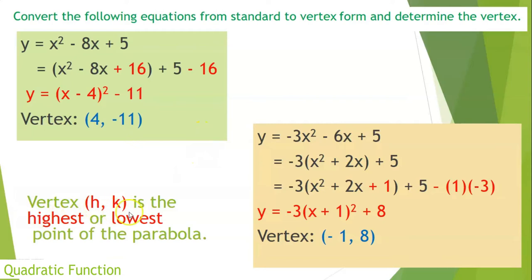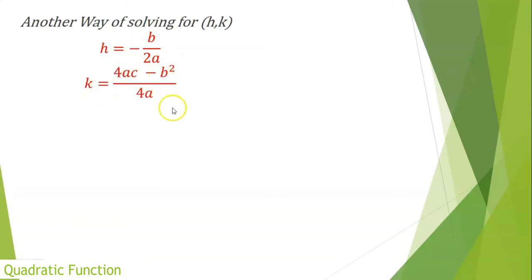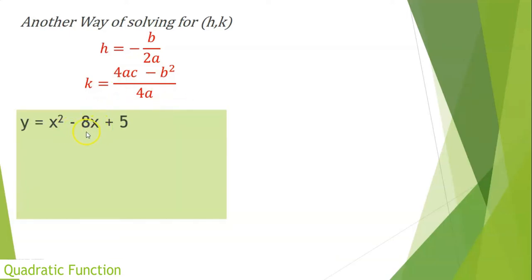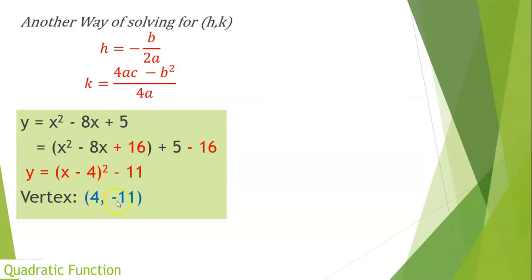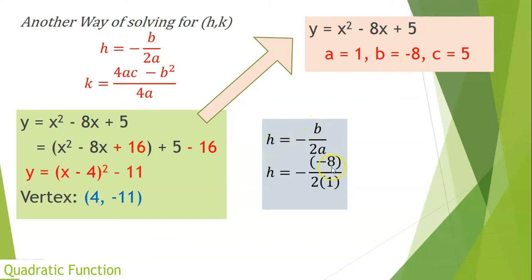Take note: the vertex (h, k) is considered as the highest or the lowest point of the parabola. There is another way of solving for h and k using the formulas h = −b/2a and k = (4ac − b²)/4a. Going back to the equation x² − 8x + 5, where a = 1, b = −8, and c = 5: h = −(−8) / (2×1) = 8/2 = 4, which matches the completing-the-square result.